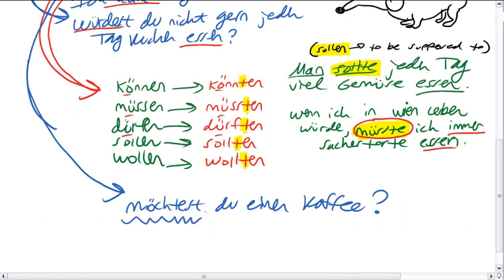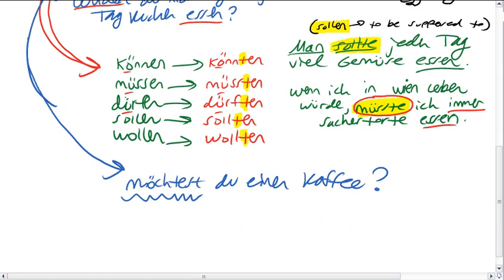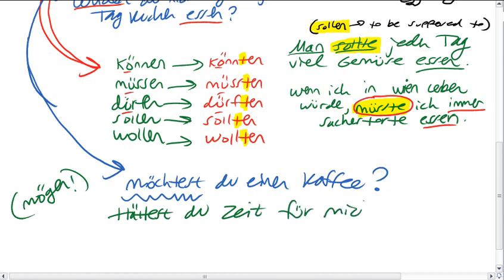Möchtest du einen Kaffee? Would you like a coffee? So right at the beginning of your German experience, you learned how to use the Konjunktiv Zwei for politeness, and what's the infinitive of Möchtest? It's Mögen. So in any event, this is not totally new, or you could ask, Hättest du Zeit für mich? Would you have time for me? And this is very polite.